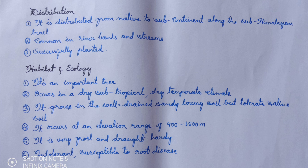Dalbergia sissoo is native to the subcontinent, distributed along the sub-Himalayan tract, and is mostly common on river banks and streams. Its habitat and ecology: it occurs in dry subtropical to dry temperate climate and grows on new alluvial soil along river banks — mostly well-drained sandy loamy soil. It occurs at an elevation range of 900 to 1500 meters. It is very frost and drought hardy but is an intolerant species and is susceptible to root diseases.